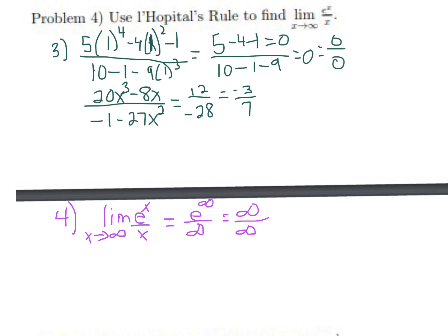We can keep applying L'Hôpital's rule if we think we're going to get somewhere. Each step takes the derivative of the top and bottom individually. The derivative of e^x is e^x, so the fraction becomes e^x / 1 = e^x. Now as x approaches infinity, that's e^∞, which is still infinity — still not a defined value.